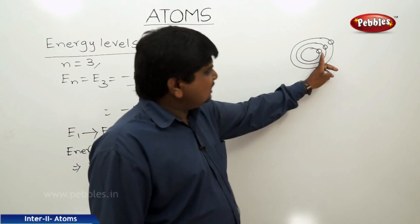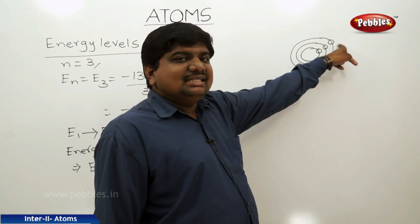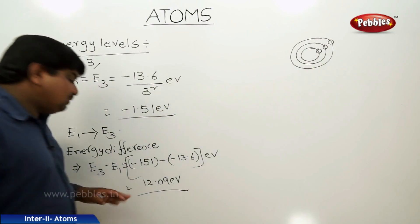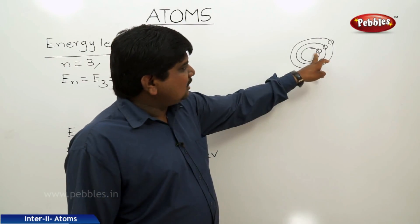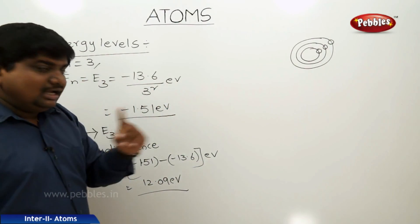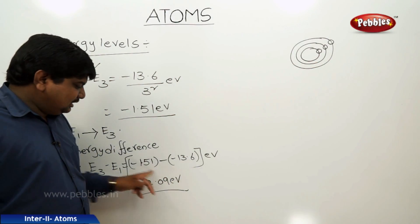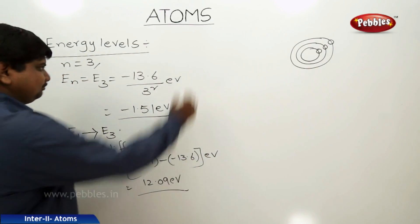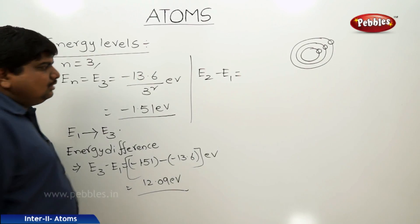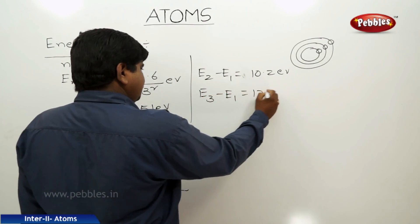That means an electron in the ground state, by absorbing energy equal to 12.09 eV, jumps directly to the second excited state, which is n equal to 3. E2 minus E1 gives 10.2 eV. E3 minus E1 gives 12.09 eV. If you want to remove an electron from its second excited state or third orbit, you must apply this much energy.